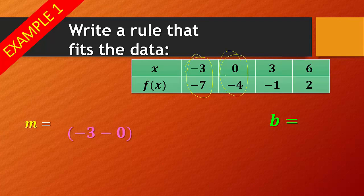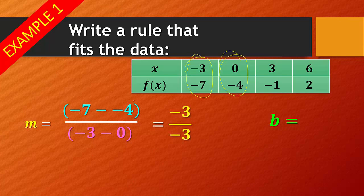So for my x values, I did negative 3 minus 0. For my y values, I did negative 7 minus negative 4. Remember what I said about subtracting a negative. Okay, that's actually negative 7 plus 4, which gives me negative 3. Negative 3 minus 0 is negative 3. And then we have two negatives here, so that's going to cancel out. And then 3 over 3 is the same as just 1.